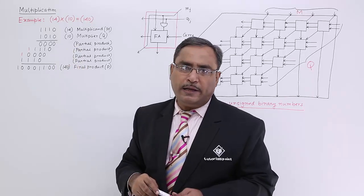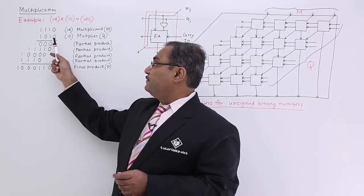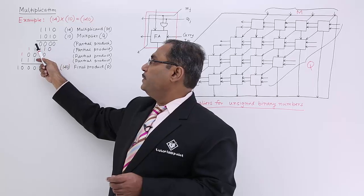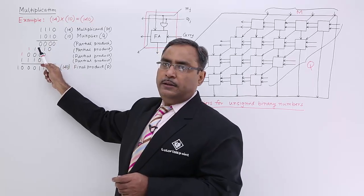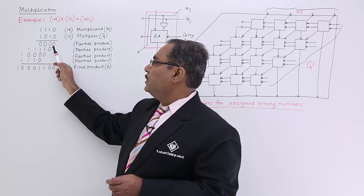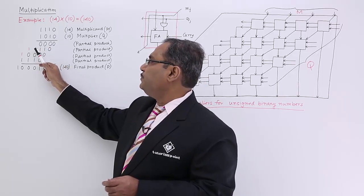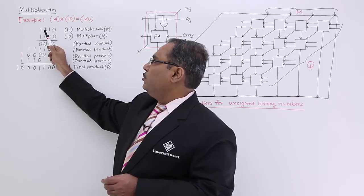Now let me go for the multiplication. It's very simple. The first term is 0, so all 0s will be coming. Next one is 1. So I should go for 1 bit left shift. I will be going for 1 bit left shift and this place will remain vacant and it will be having 1110.